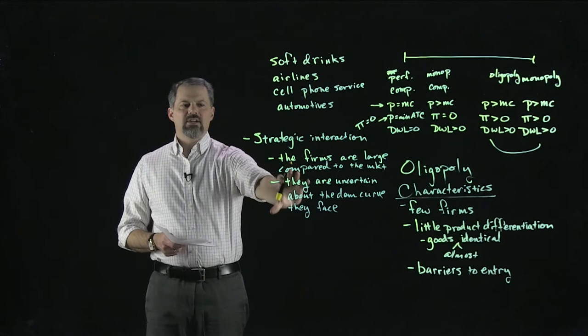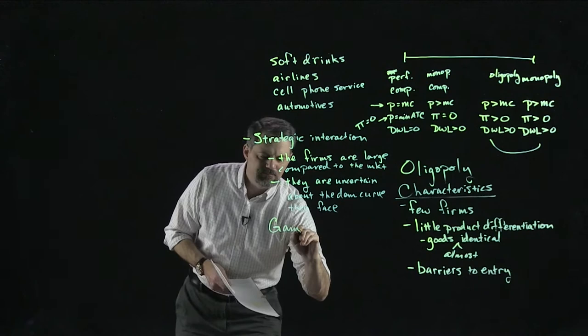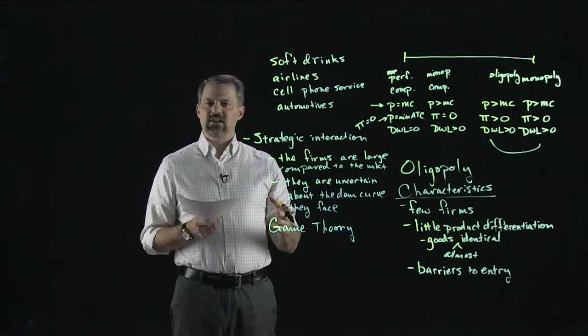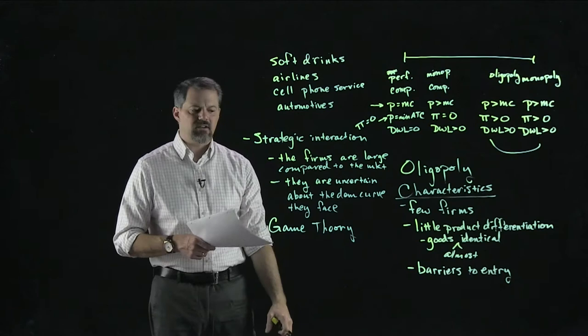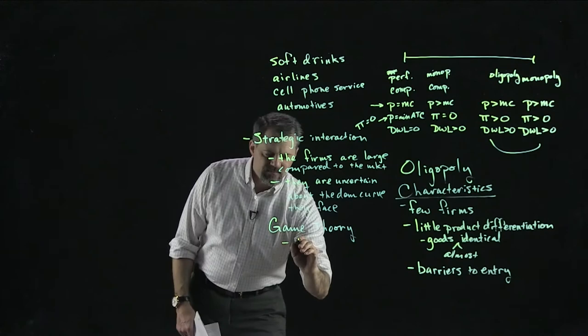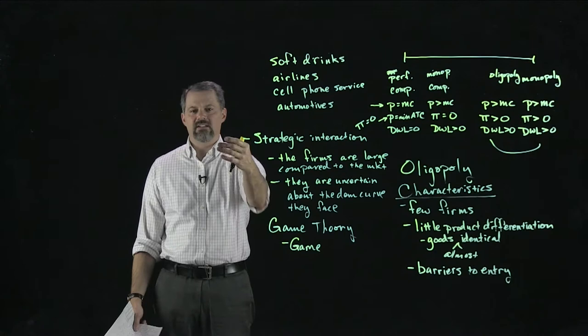When we have a situation where we need to study the strategic interaction between two people or two firms, we use what's referred to as game theory. Game theory is a sub-discipline within economics — it's the study of strategic interaction. Within game theory, we analyze things using a game, which is what we call the strategic interaction, although it doesn't have to be a fun game.